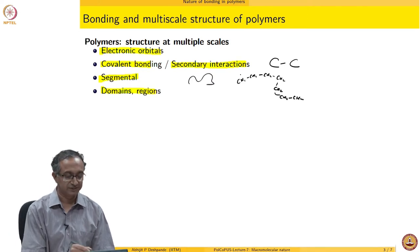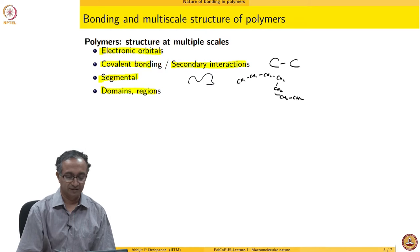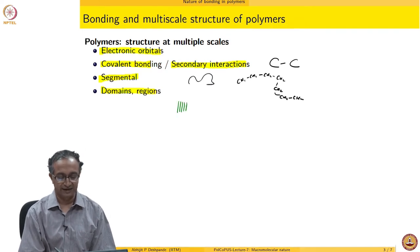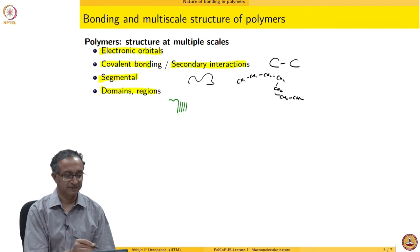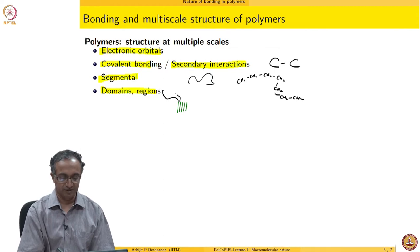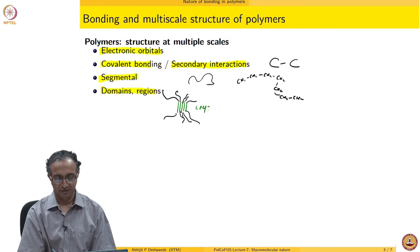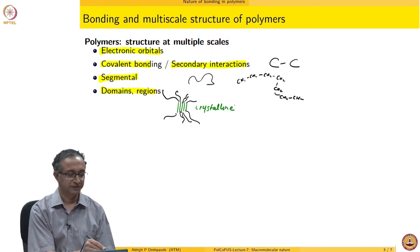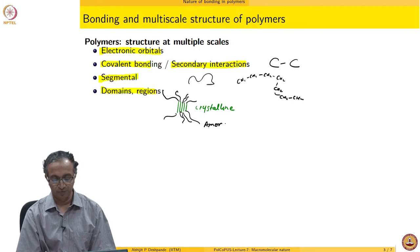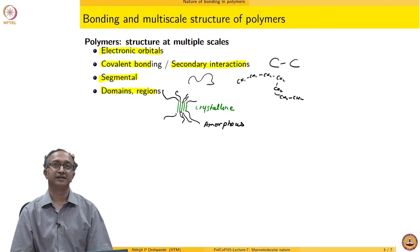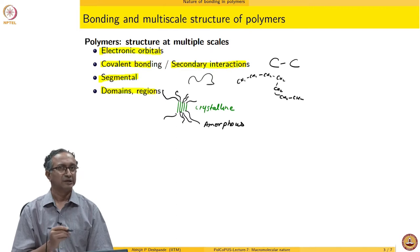A segment may have, let us say, 10 or 20 repeating units, so what is the length scale? Then domains — if it is a crystalline and amorphous domain, you may have some set of segments aligned together, and the macromolecule may continue into an amorphous region. So you may have crystalline regions and amorphous regions — these are domains of amorphous and crystalline nature in a macromolecule. These are different length scales, and I am sure you can look up and try to find out the length associated with each of these.